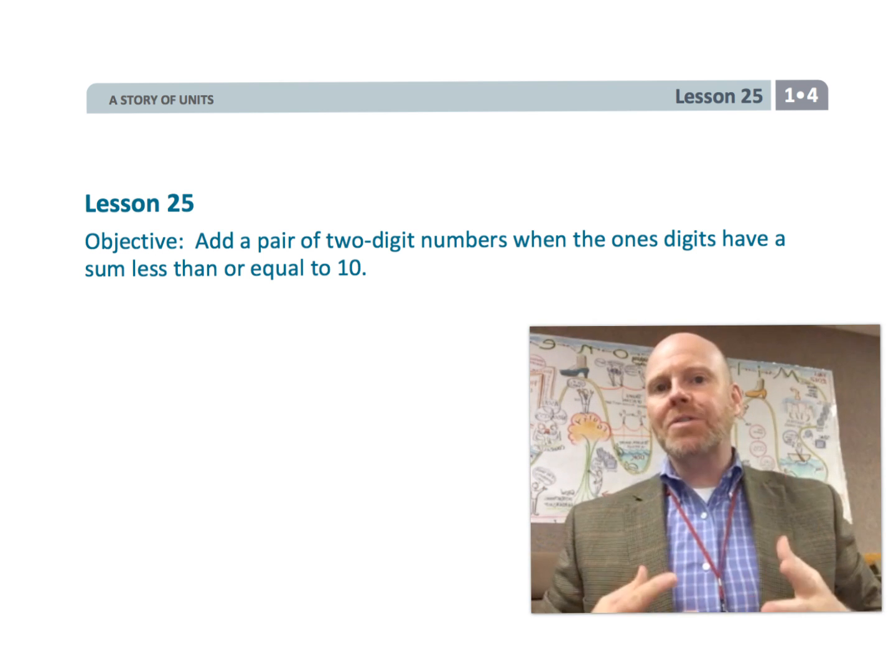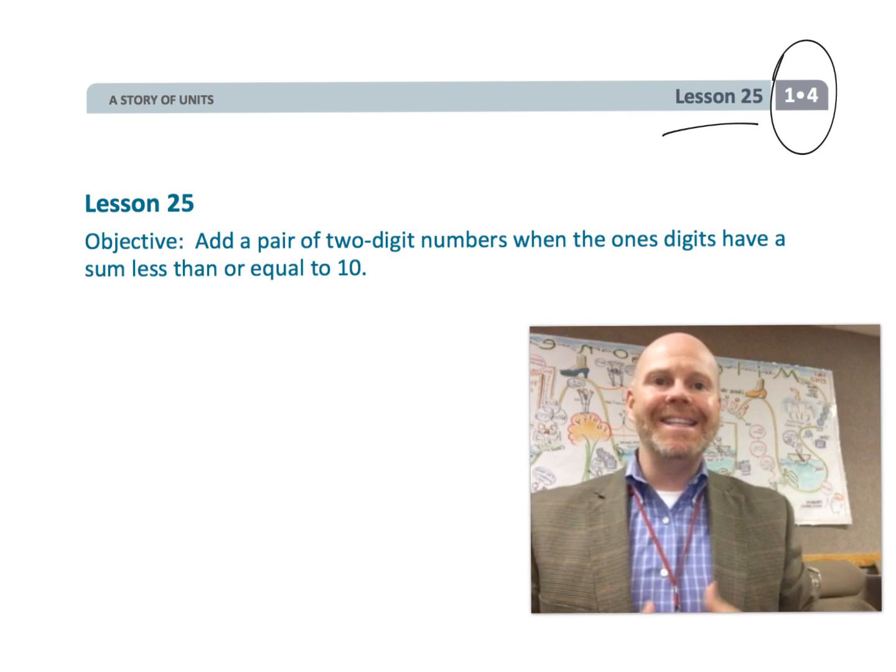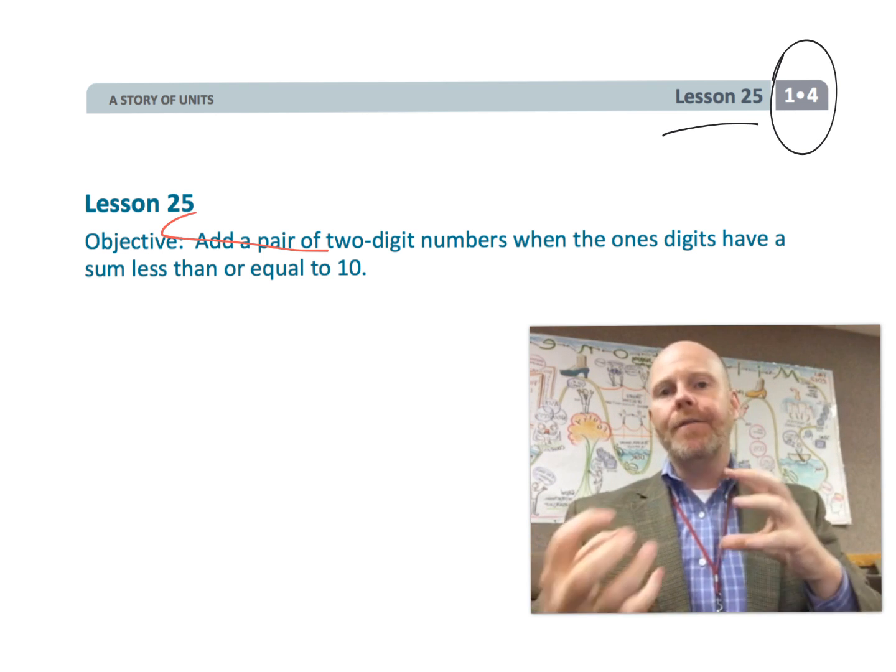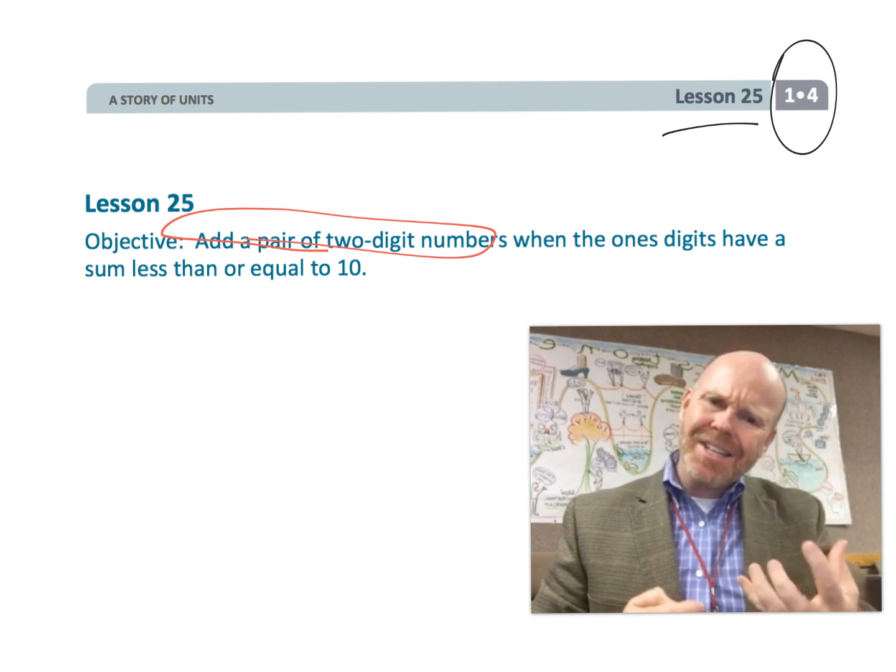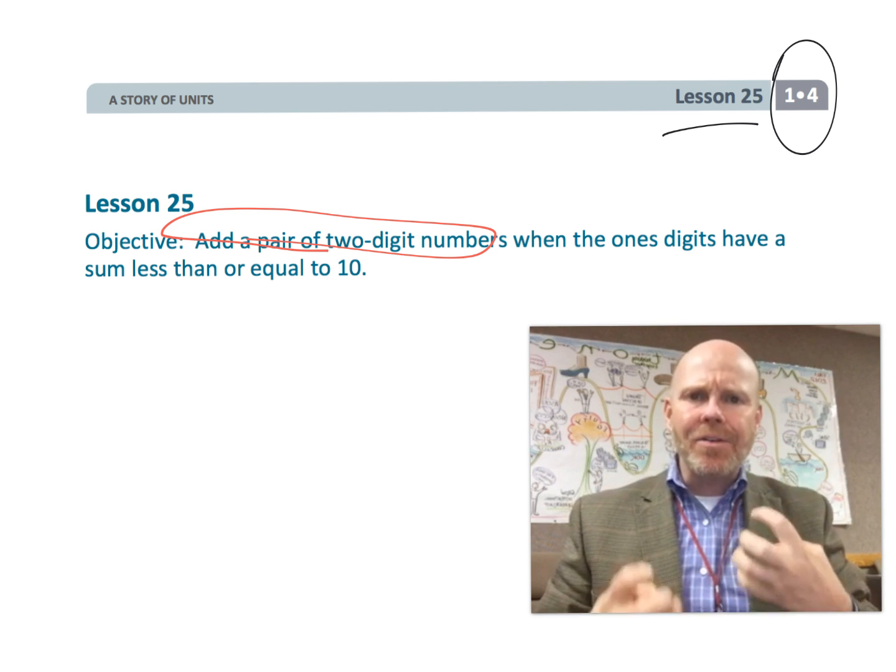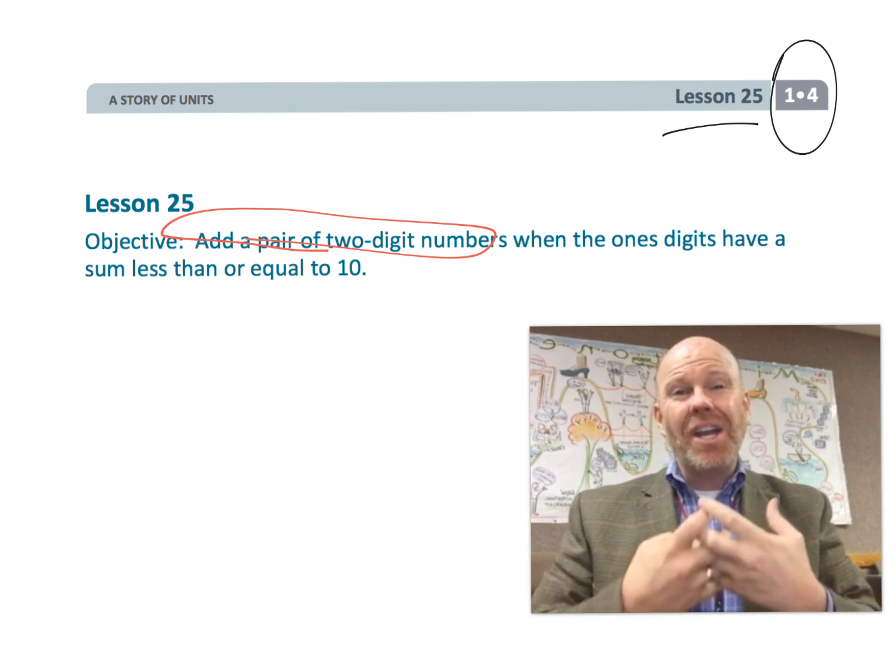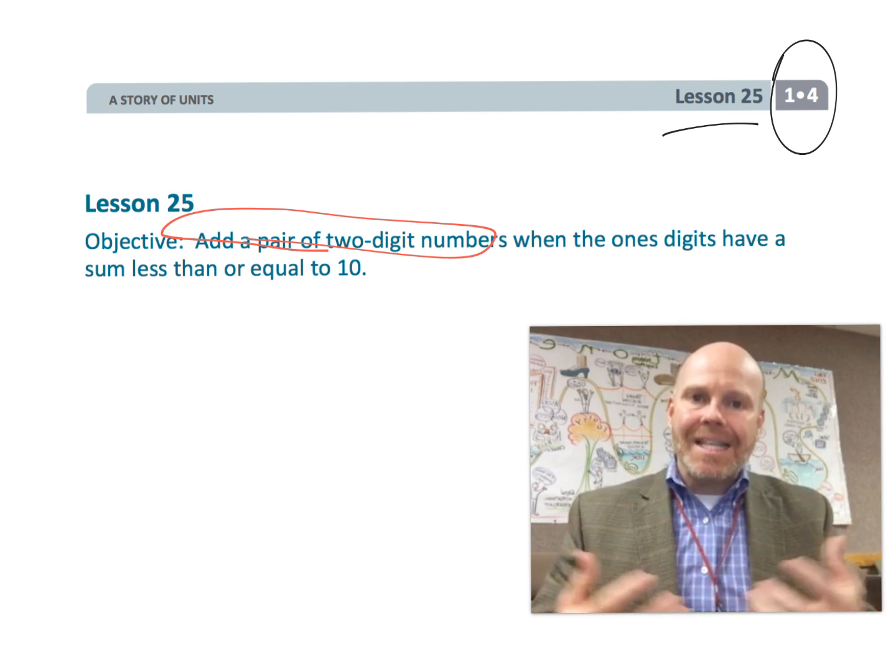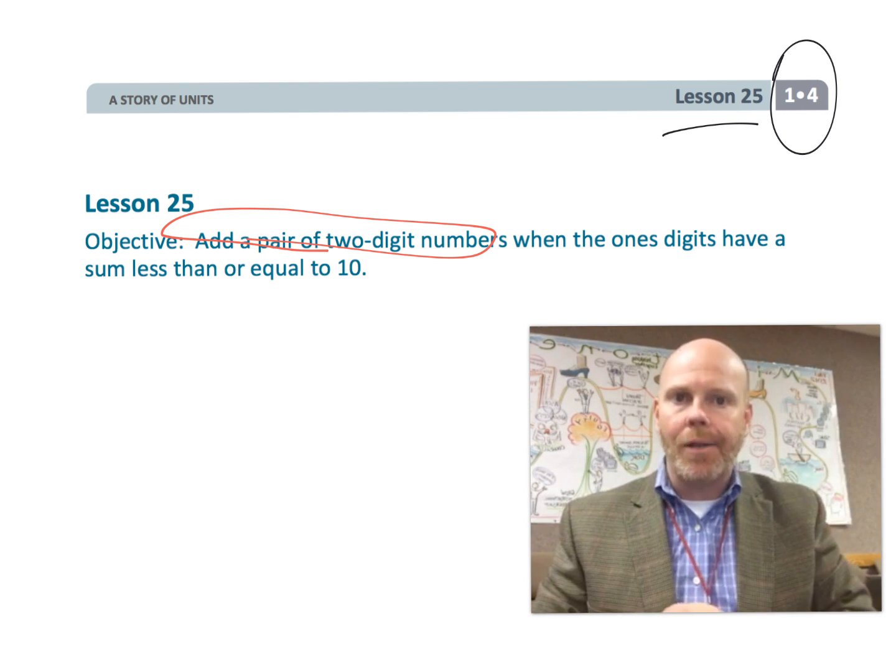All right, this is first grade, module 4, lesson 25, and in this lesson, students are going to continue adding a pair of two-digit numbers. We're still not quite getting to that standard algorithm yet because we're really focusing on number sense and making sense of what's going on rather than just following a rule.